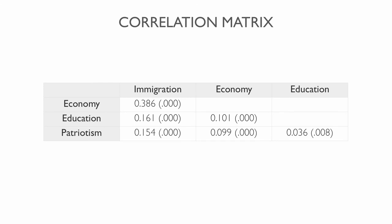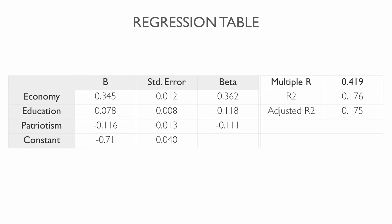According to this correlation matrix, perceived state of the economy seems to be most associated with perceptions towards immigration compared to the other variables. Education seems to be weakly related to both perceived state of the economy and attitudes towards immigration, while patriotism is only weakly related to attitudes towards immigration, with an almost negligible correlation with the other independent variables. Perceived state of the economy appears to be the best predictor of attitudes towards immigration, with a beta of 0.362, compared to 0.118 and minus 0.111 for level of education and patriotism, respectively.